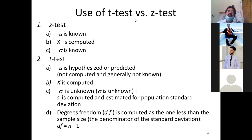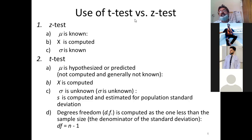Degrees of freedom: n minus 1 ke barabar hota hai. Jitna sample size aapne liya, us mein se ek minus karo toh degrees of freedom milte hain. T-test mein table se value find out karte waqt alpha ke niche degrees of freedom — n minus 1 — ke sath value malum ki jaati hai, jaise Z-test mein table se value malum karte hain.